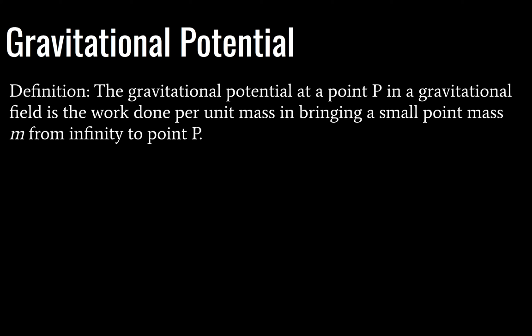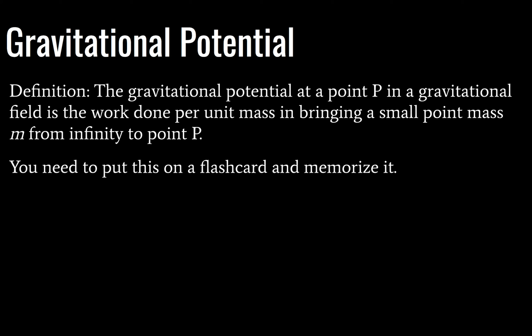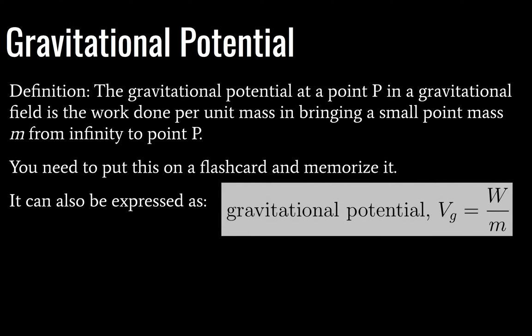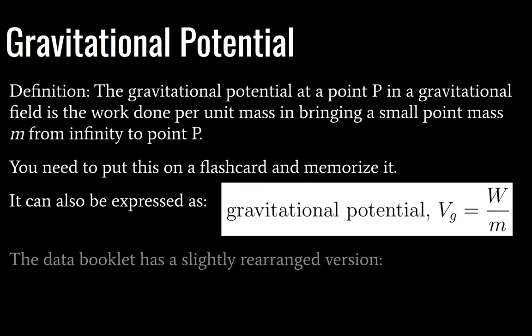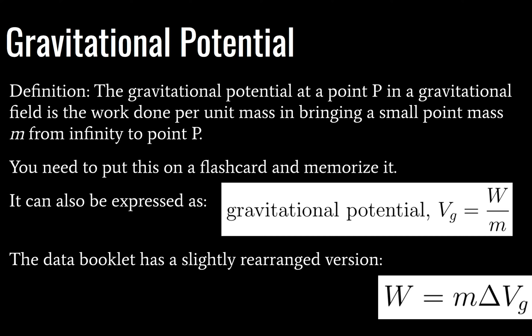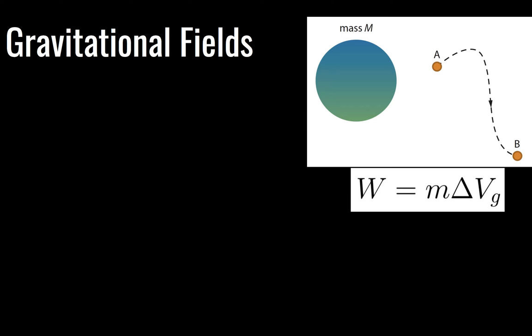The gravitational potential at a point P in a gravitational field is the work done per unit mass in bringing a small point mass m from infinity to point P. You need to know this basically word for word — put it on a flash card, memorize it, know it, learn it, do not forget it. Luckily, we can express this mathematically. Gravitational potential V sub G is equal to work divided by mass. The data booklet rearranges this slightly, and you will find that version in subtopic 10.1.